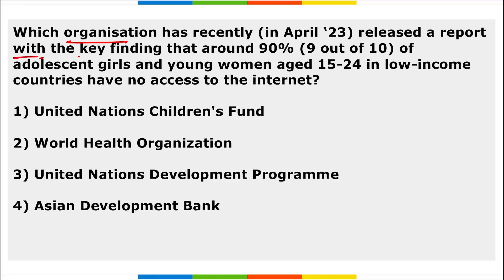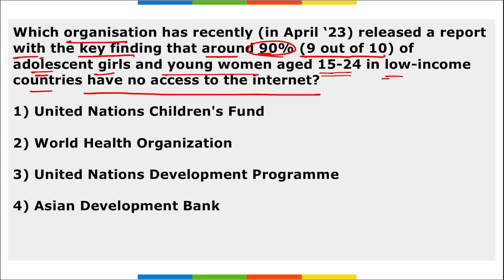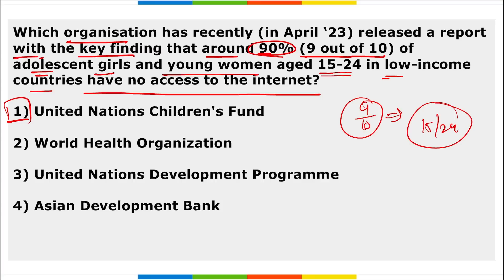An organization recently released a report with the key finding that around 90% — that is 9 out of 10 — adolescent girls and young women aged 15 to 24 in low-income countries have no access to the internet. This data was released by UNICEF — the United Nations Children's Fund. Among 54 countries studied, for every 100 male youth with digital skills, only 65 female youth have the skills.